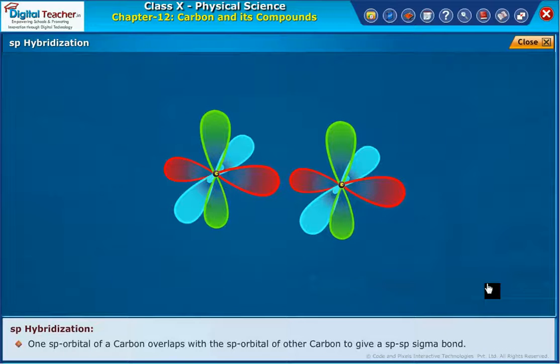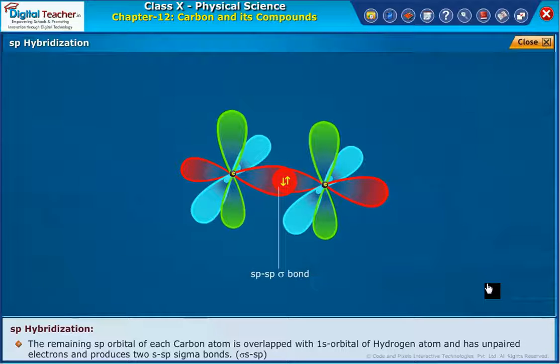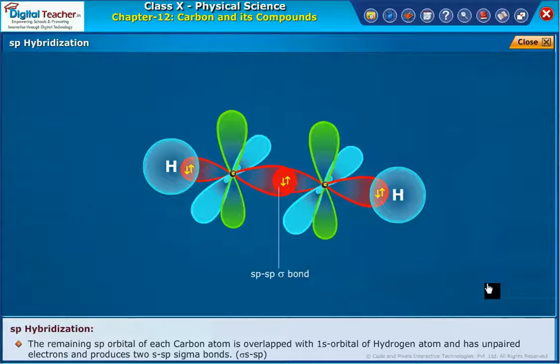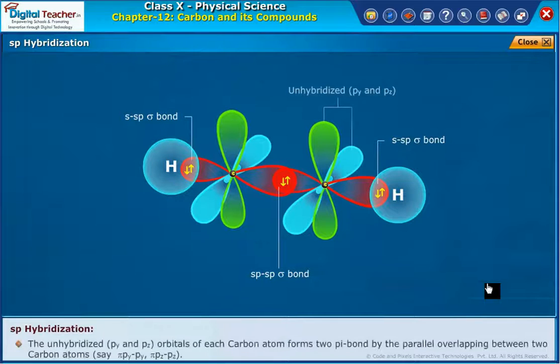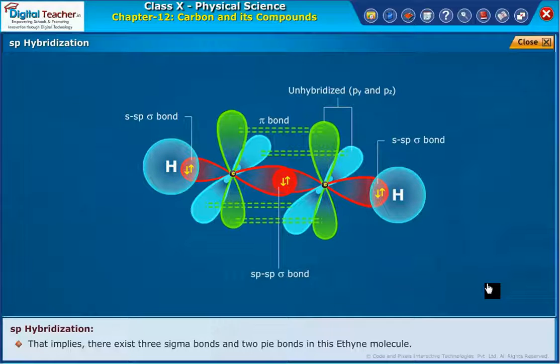One SP orbital of a carbon overlaps with the SP orbital of other carbon to give a SP-SP sigma bond. The remaining SP orbital of each carbon atom overlaps with one S orbital of hydrogen atom, which have unpaired electrons, and produces two S-SP sigma bonds. The unhybridized py and pz orbitals of each carbon atom form two pi bonds by the parallel overlapping between two carbon atoms, py-py pi and pz-pz pi. That implies there exist three sigma bonds and two pi bonds in this ethyne molecule.